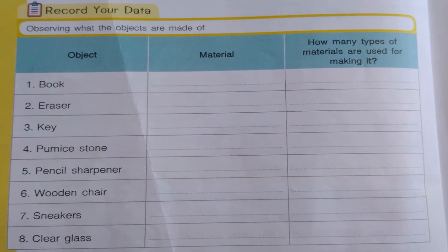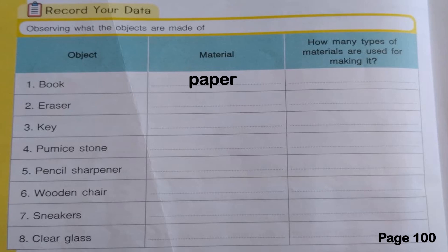This time, all you have to do is get your pencil and answer the book on page 100. For example, number 1 — the object is a book. What material is the book made up of? It is made up of paper. It is made up of only one type of material, which is paper. Now answer number 2 until number 8.